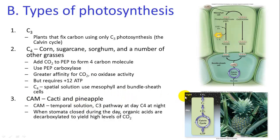CAM plants, also found in arid environments, close their stomata during the hot daytime and store malate, then open their stomata at night to perform the Calvin cycle. This is similar to C4 but separated by time rather than compartment, preventing wilting and water loss while still fixing carbon.